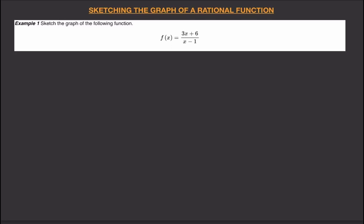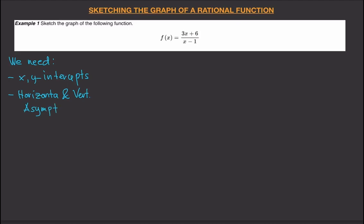To graph a rational function we will need some information about the graph. We need the x and y intercepts, the horizontal and vertical asymptotes. We might also need some additional points, but that will depend later on.